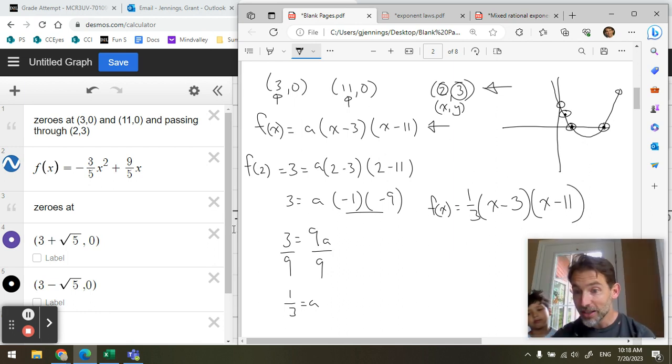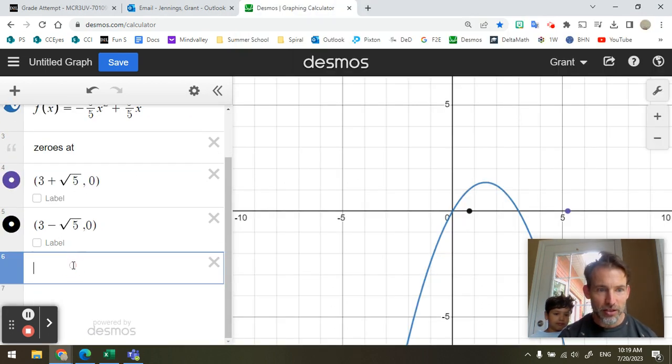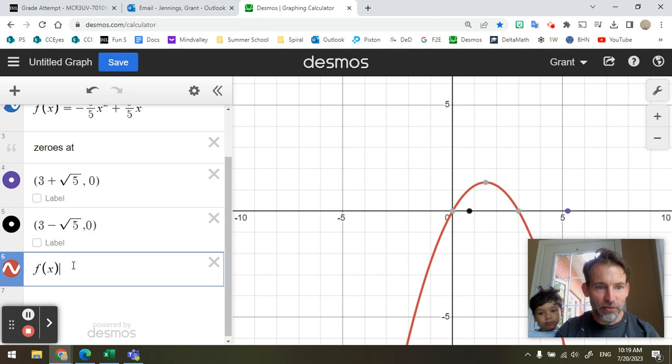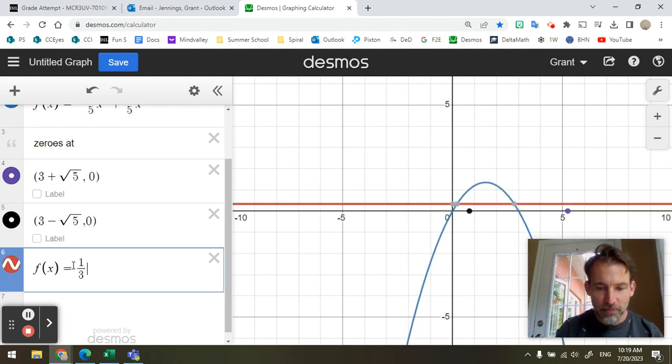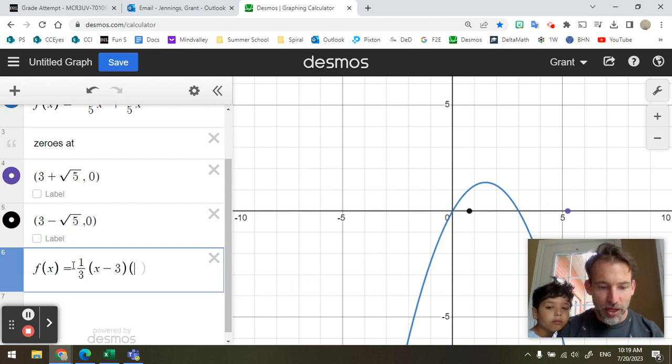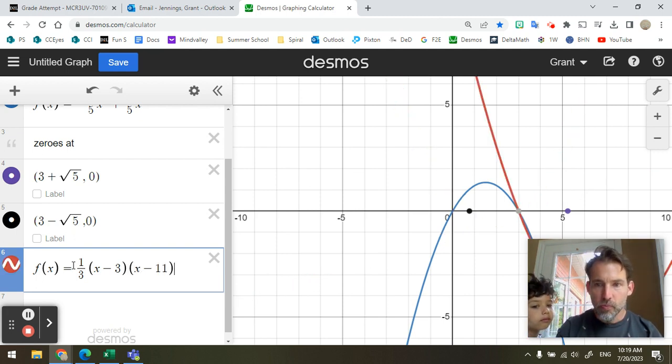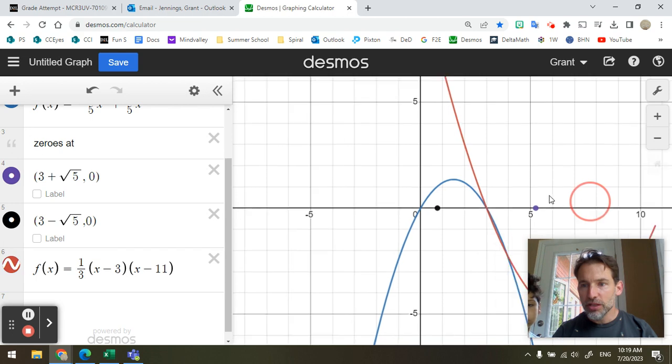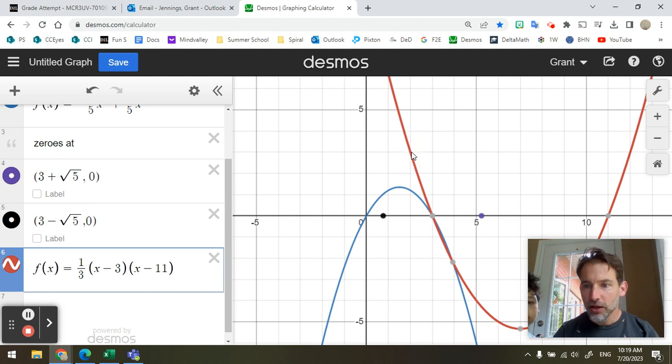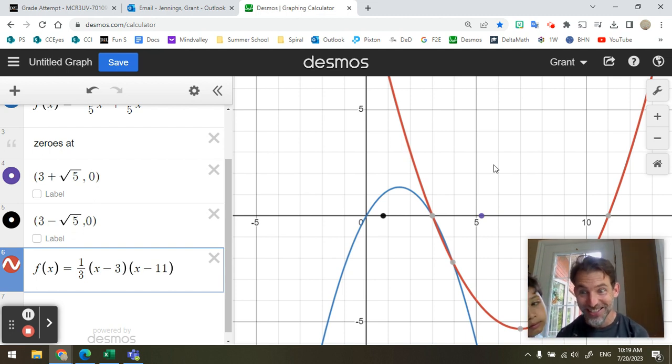Next thing. What do you think we're going to do next? Check our answers in Desmos. Might as well check your answers in Desmos. My goodness. F(x) could be written as 1/3 bracket (x-3) multiplied by (x-11). Look at that. There's a zero at (3,0). There's a zero at (11,0). Here's the (2,3). So it checks out. It works. So you can check these in Desmos, people, and see if it works.